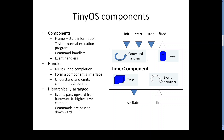Here we can see the TinyOS components: frame, command handlers, event handlers, and tasks. The frame is used to store state information, tasks are for normal execution of programs, command handlers handle commands, and event handlers handle events. These command handlers and event handlers run a compilation that forms a component's interface, which understands and emits commands and events, and it is hierarchically arranged.